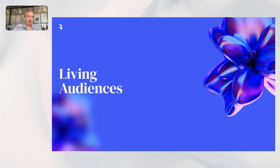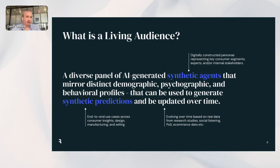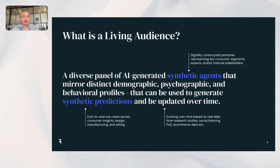I want to talk about what we call a living audience — an evolution from a static segmentation that we've found in our initial deployments with clients to be very effective. A living audience: instead of having five or six segments, you have a very diverse panel of AI-generated synthetic agents that mirror the distinct demographic, psychographic, and behavioral profiles within those segments. These can be used to generate what we call synthetic predictions about those segments and the nuances within them, and they can be kept updated over time.